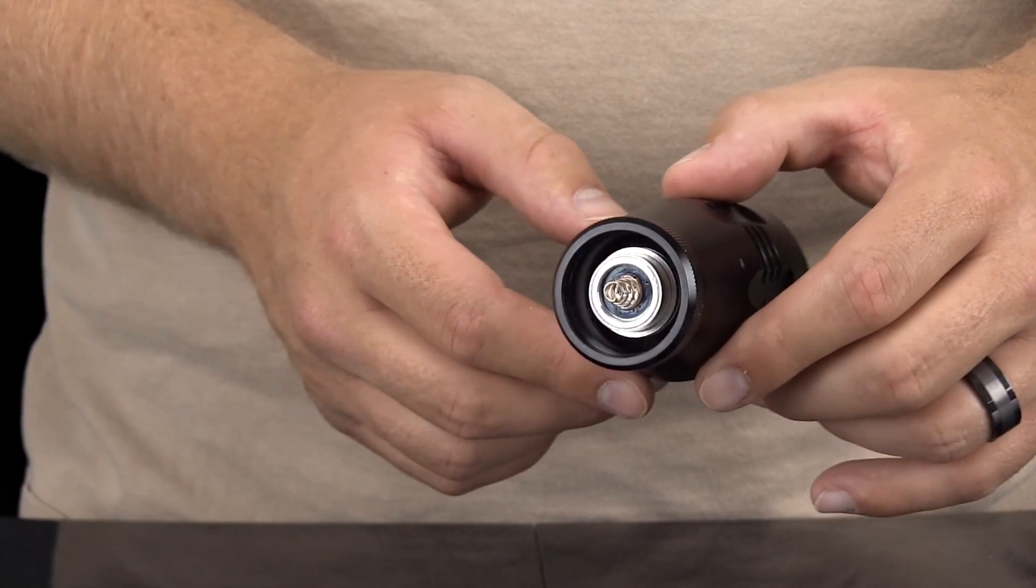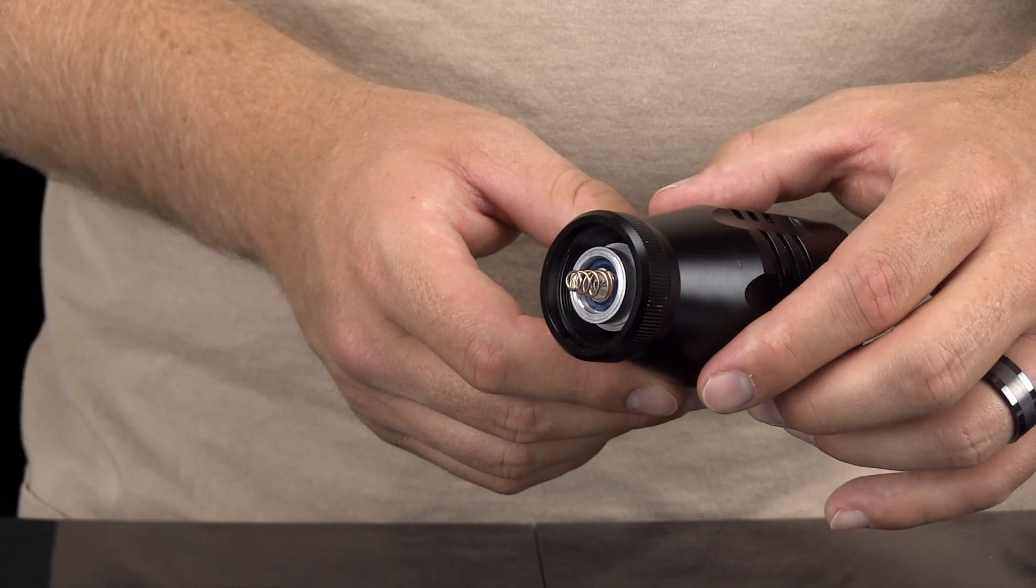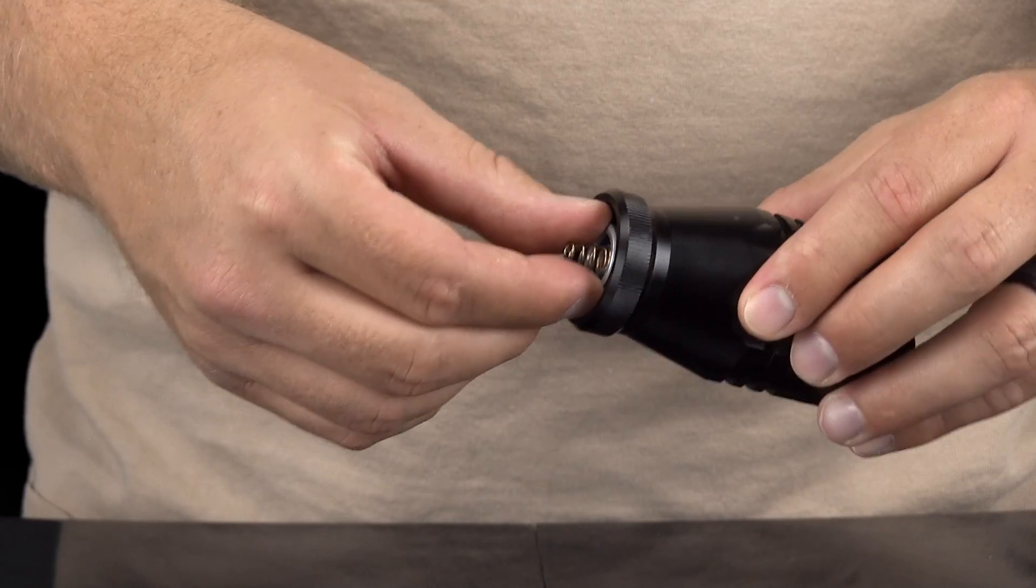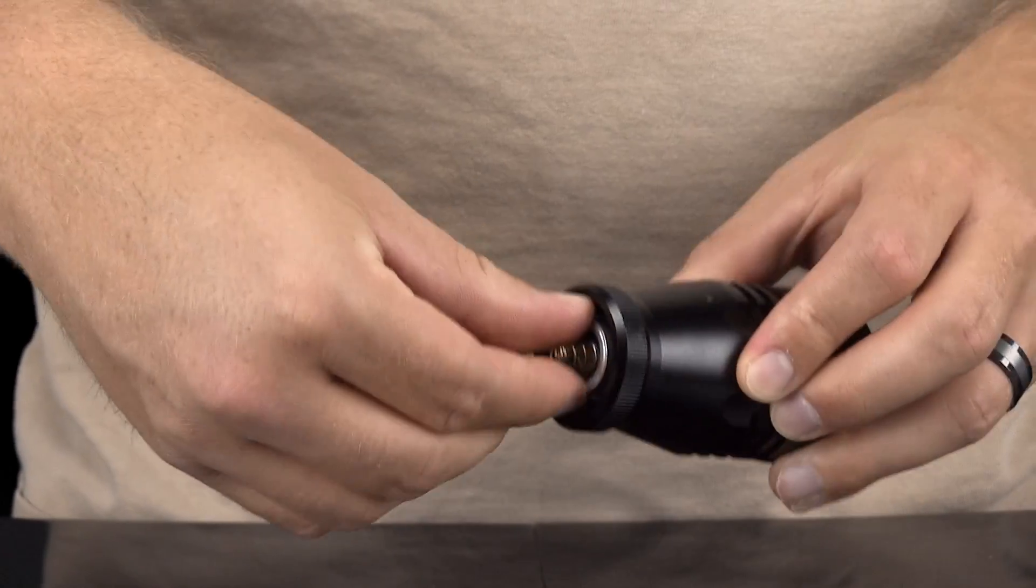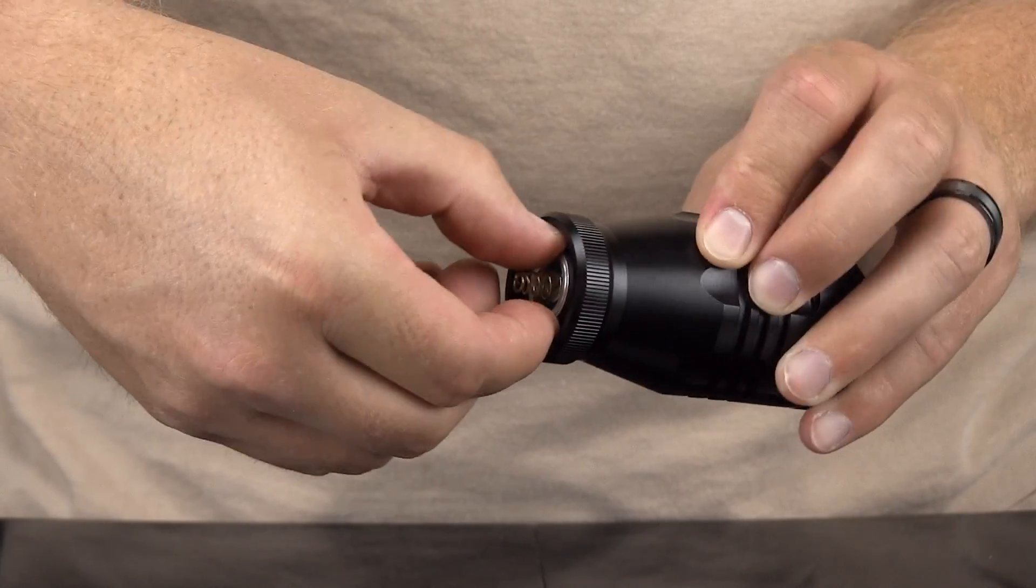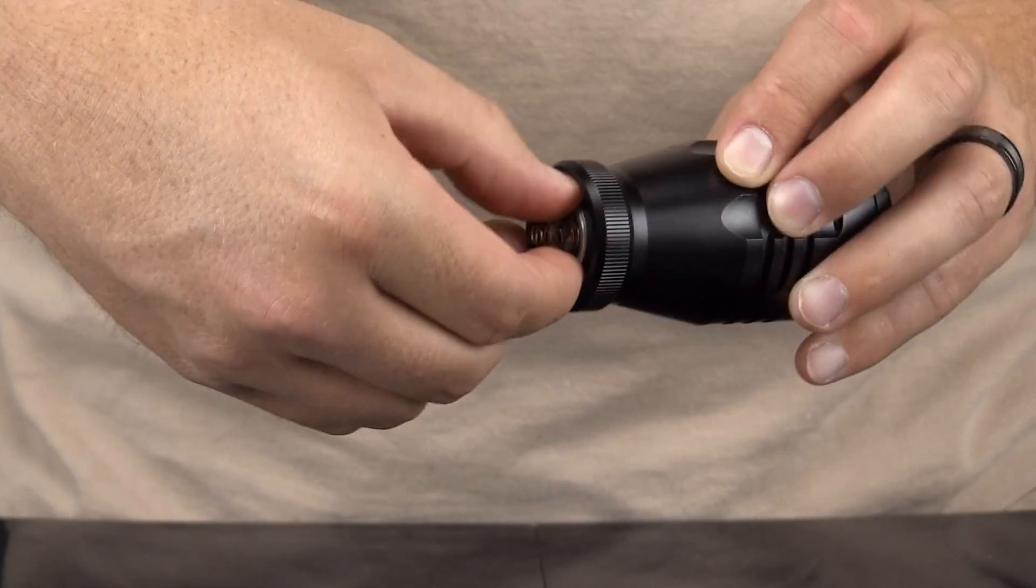When you look inside the bezel, you will see the bottom end of the LED assembly. You remove the LED assembly by carefully gripping it on the edges and gently unscrewing it from the reflective housing.